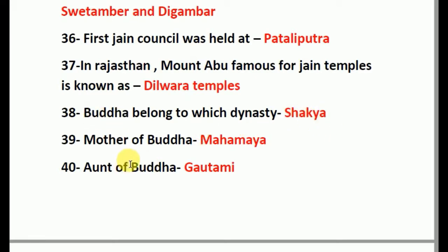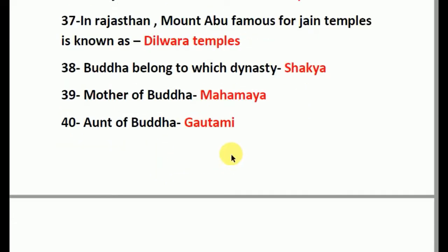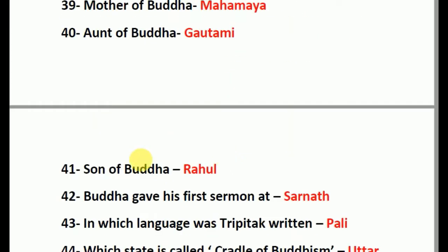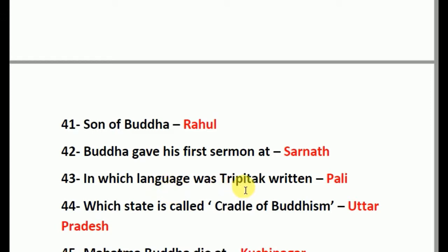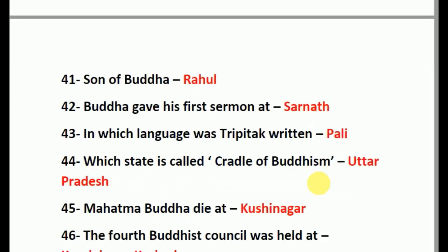Mother of Buddha: Mahamaya. Aunt of Buddha: Gautami. Son of Buddha: Rahul. Buddha gave his first sermon at Sarnath. In which language was the Tripitaka written? The answer is Pali language. Which state is called the Cradle of Buddhism? Uttar Pradesh.